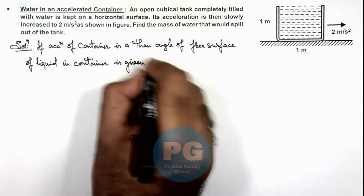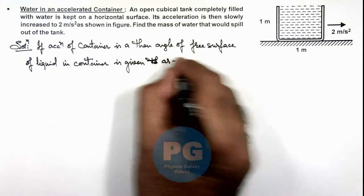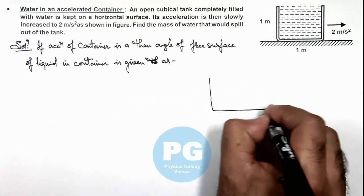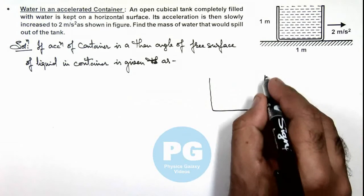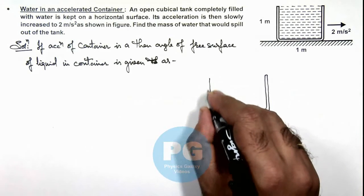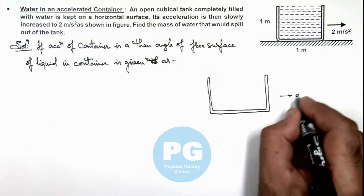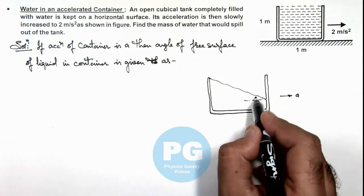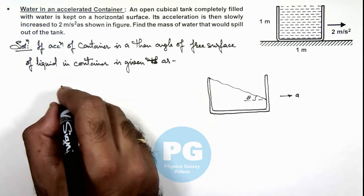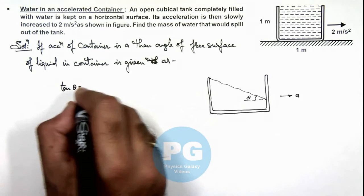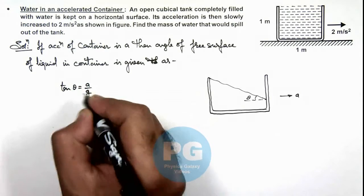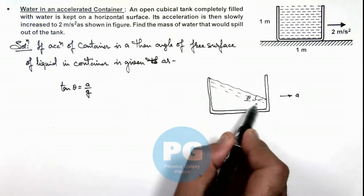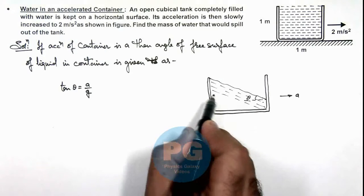This we have already studied in concept videos: if the container is accelerated with acceleration ay, then the liquid level will be inclined at an angle theta, where the value of tan theta is given as ay by g. The free surfaces of the liquid are all inclined, which means in this situation...